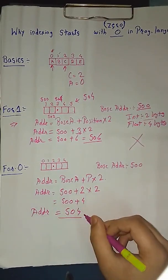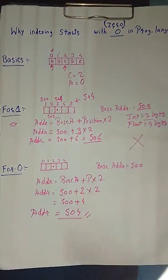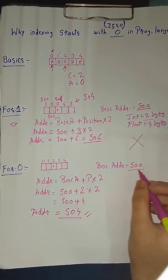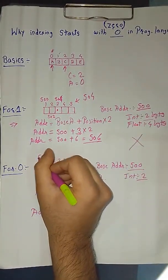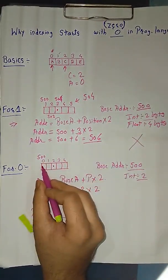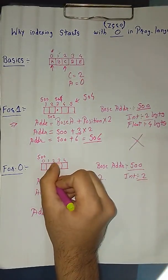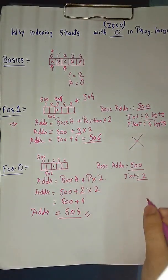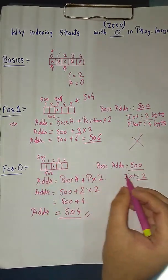By calculation we have got the address as 504. Let's verify it by checking in the array elements. The base address is 500 and integer value is 2, so the first will be 500 at 0th element, and the first element will be 502, and the third element we have to find will be 504.